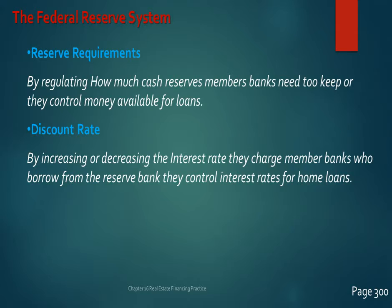The discount rate is the interest rate that the Fed charges its member banks when the banks borrow from the Fed. If the Fed increases its discount rate, member banks have to turn around and charge even more on the individual loans they make, increasing the interest rates that consumers pay.